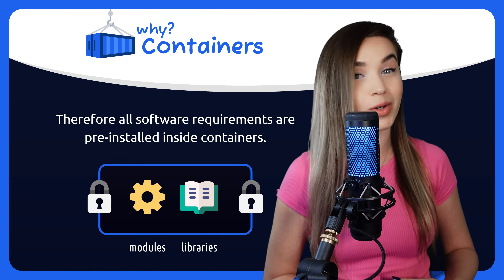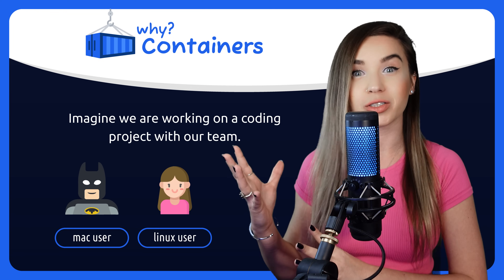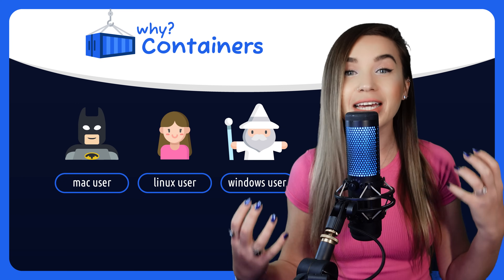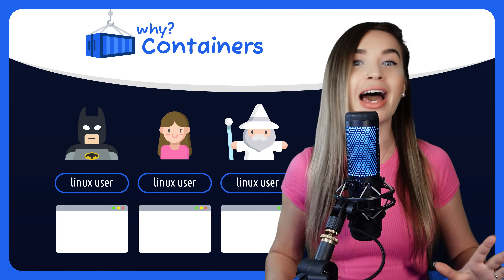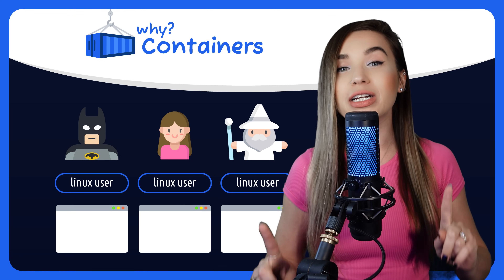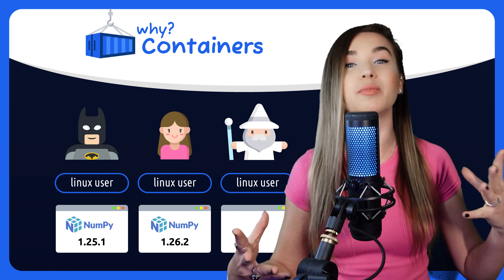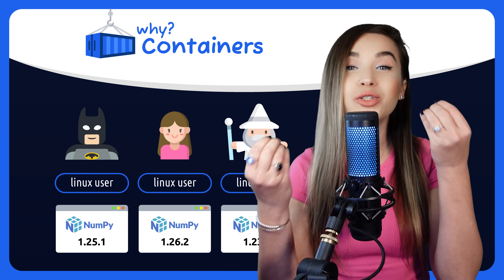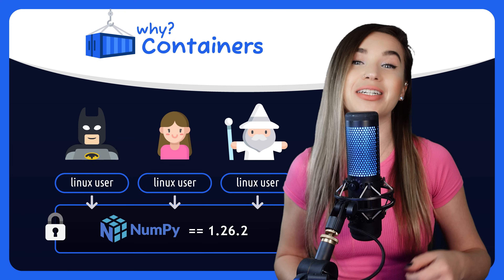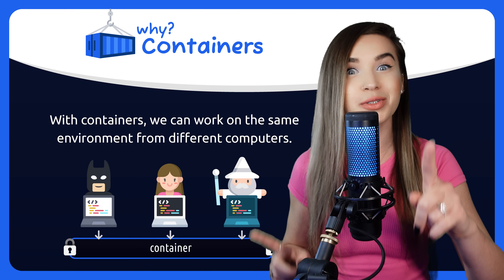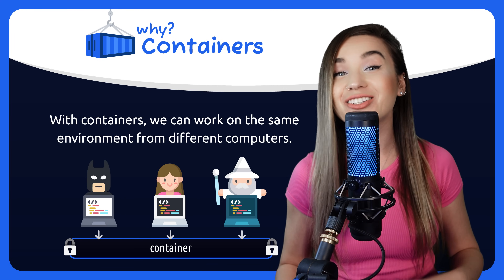But why is it so important? Let's say we are working on a team project: Batman has a Mac machine, I have a Linux one, and Gandalf is using Windows. Our project may have the exact same code but it will probably manifest differently on every system. Or even if we all have the same operating system, I have the newest version of NumPy but it fails on Batman's computer because it has conflicts with some other software. Instead, we can just create a controlled, consistent environment that all of us can use — and that's exactly where Docker comes in handy.